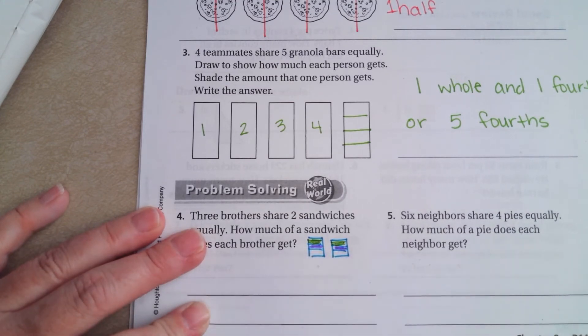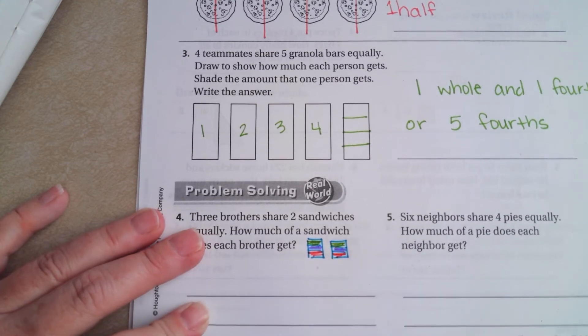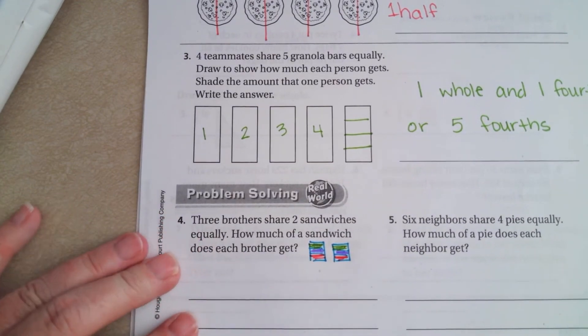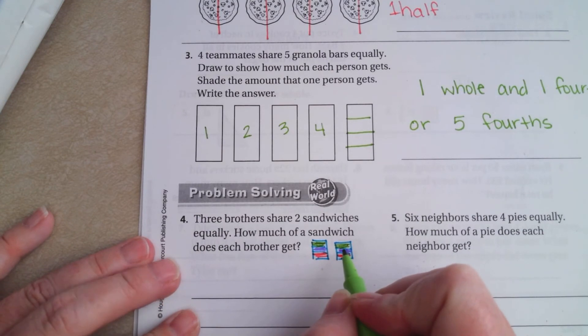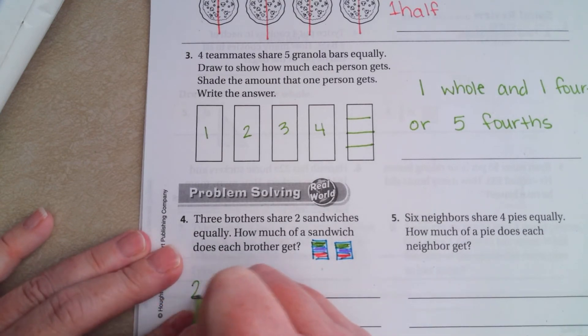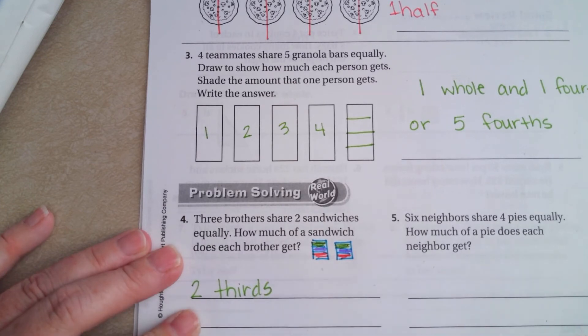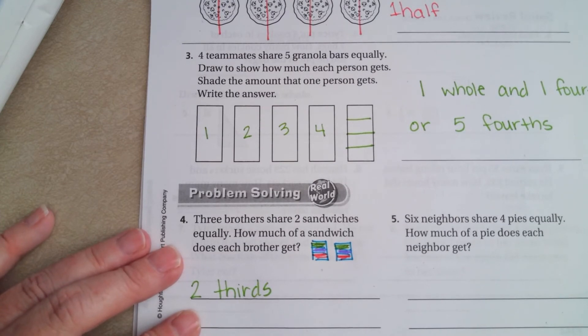So, each brother is going to get 1 3rd of each of these. Now, 1 3rd here and 1 3rd here, well, that's 2 3rds of a sandwich.